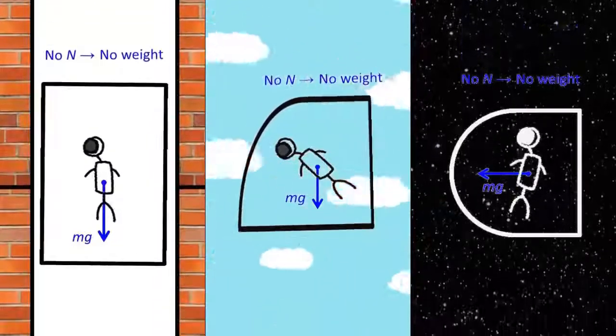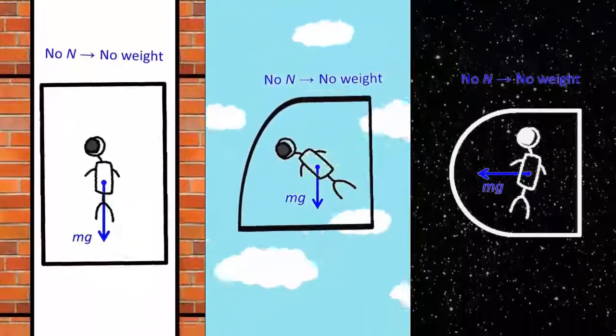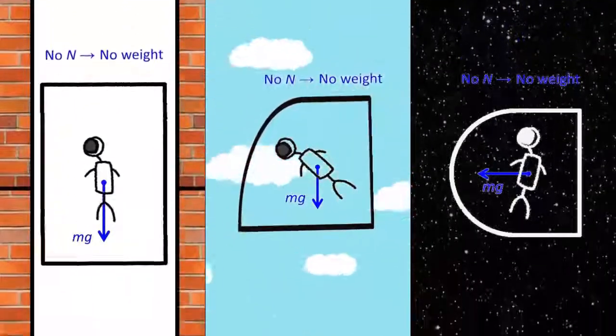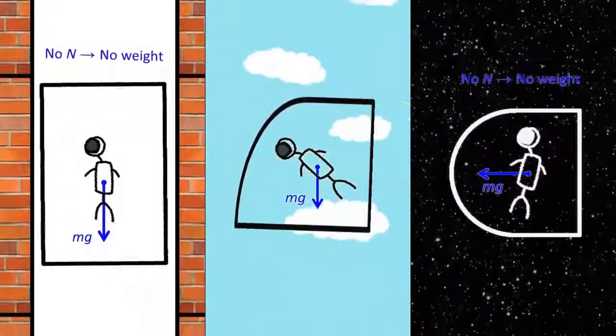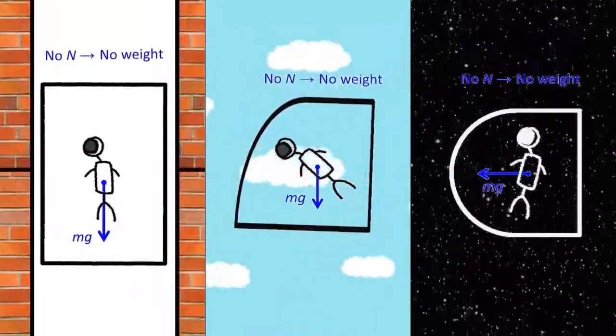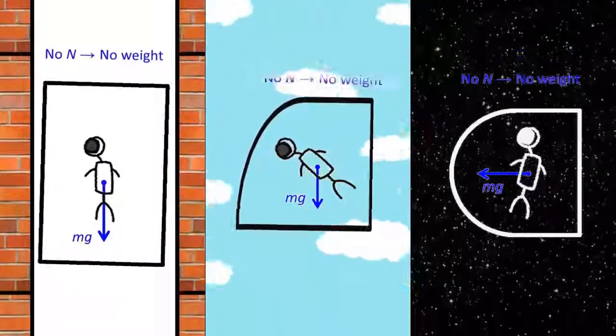To be weightless, all you need is for the surroundings to free-fall together with you. It's not that the Earth is not pulling you anymore. It's just that you cannot throw your weight around if the floor is free-falling as fast as you do.